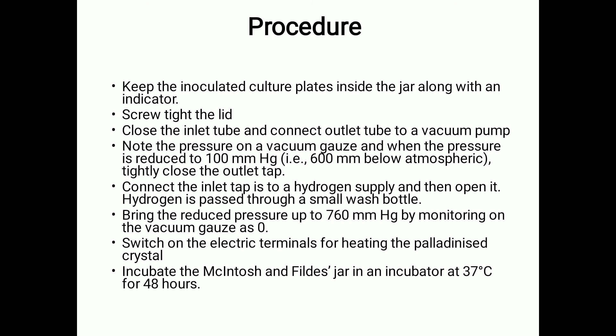Now for the procedure: first, keep the inoculated culture plates inside the jar along with the indicator, then screw the lid tight. Close the inlet tube and connect the outlet tube to a vacuum pump until at least three-quarters of the air is removed. Note the pressure on the vacuum gauge — when pressure is reduced to 100 mmHg, that is 600 mm below atmospheric, tightly close the outlet tap.